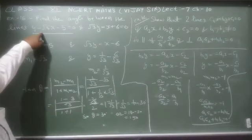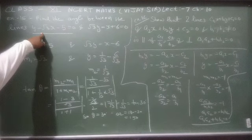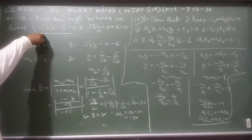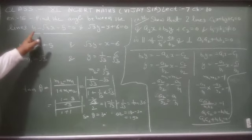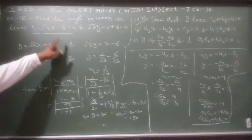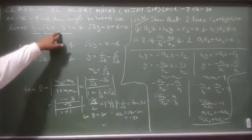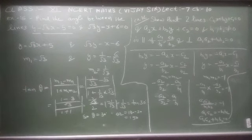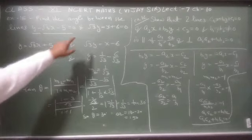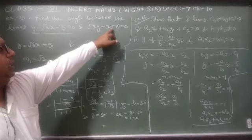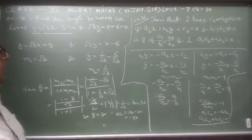Slope intercept form y = mx + c में convert करते हैं। पहली equation y - √3x - 5 = 0 को rearrange करें: y = √3x + 5, तो m1 = √3। दूसरी equation √3y - x + 6 = 0 को rearrange करें — x को right side transfer करेंगे, negative होगा।